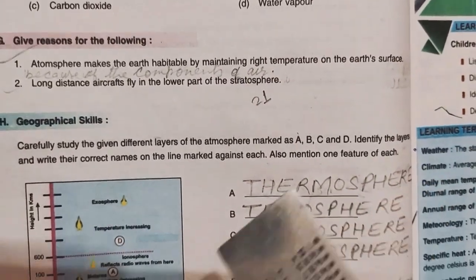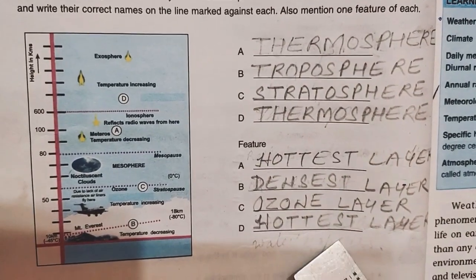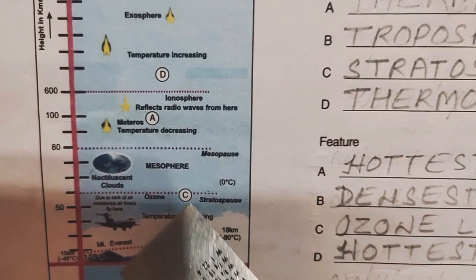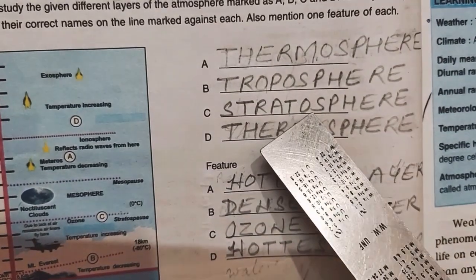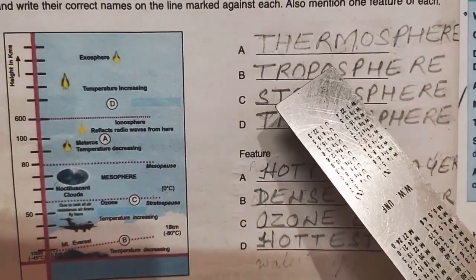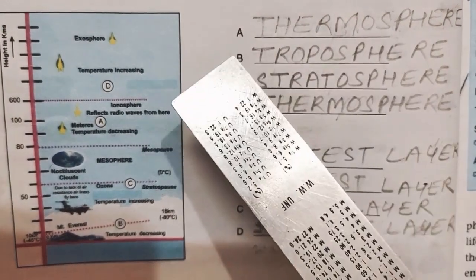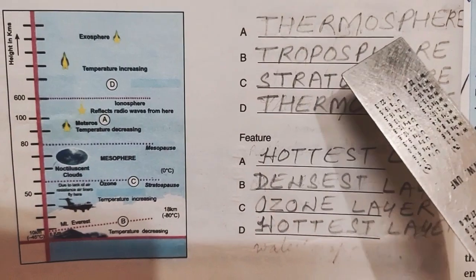Now you see this diagram and complete this exercise. There are numbers A, B, C and D. Carefully study the given different layers of the atmosphere marked as A, B, C and D. Identify the layers and write their names on the line marked against each. Also mention one feature of each.